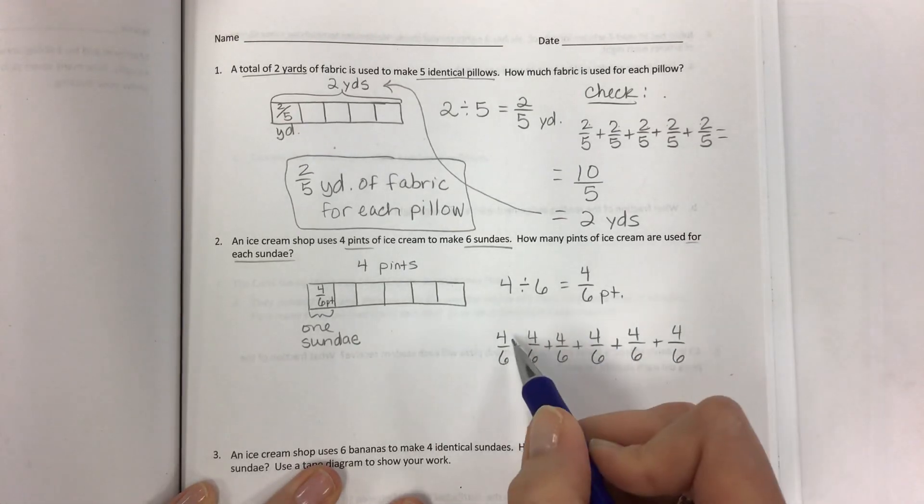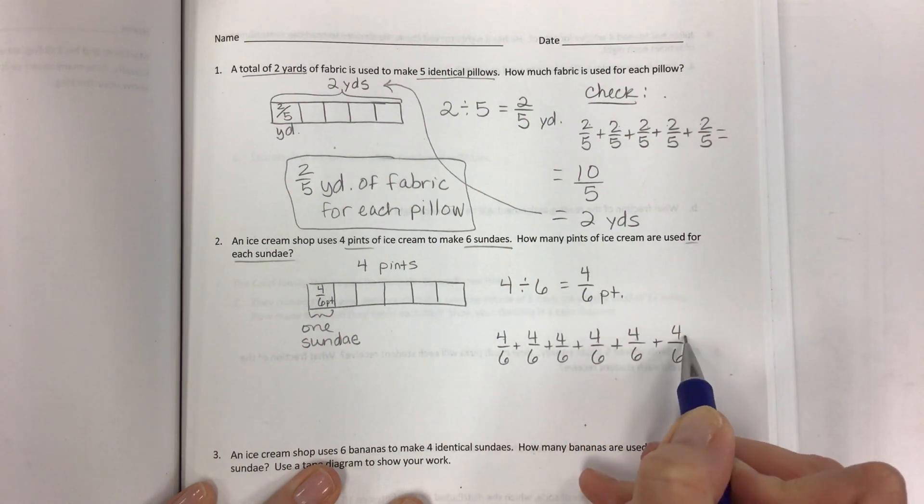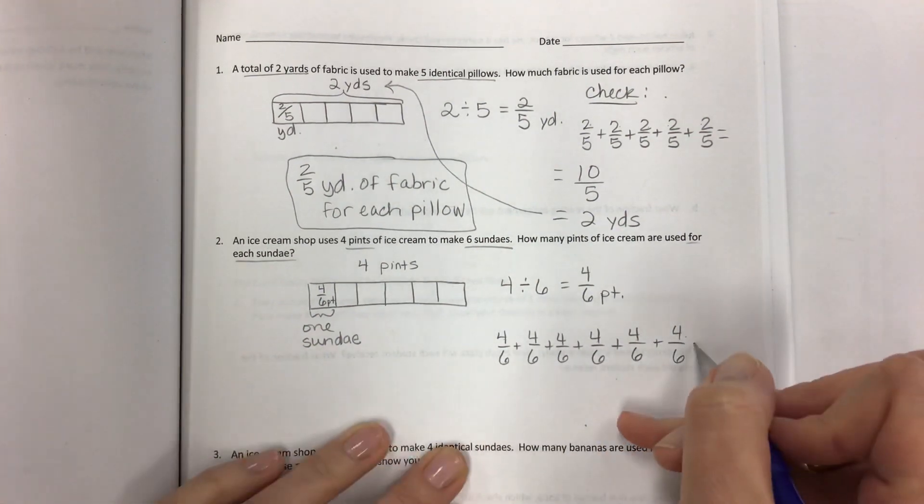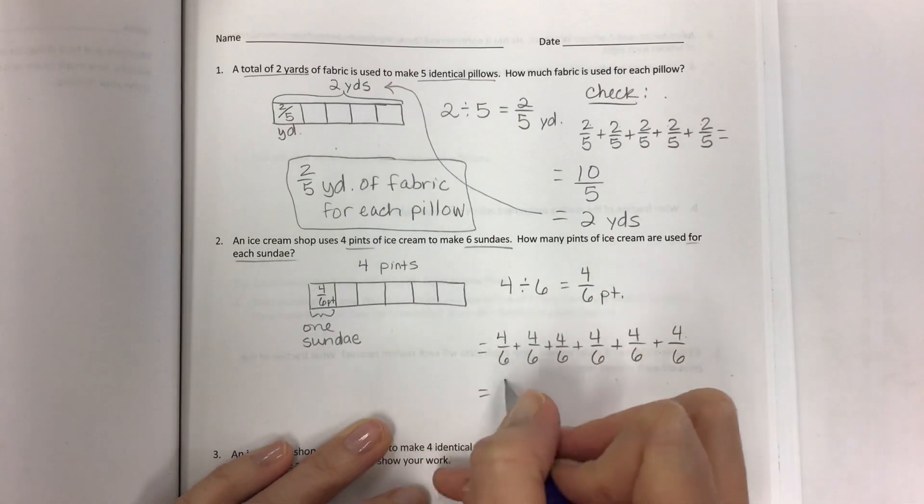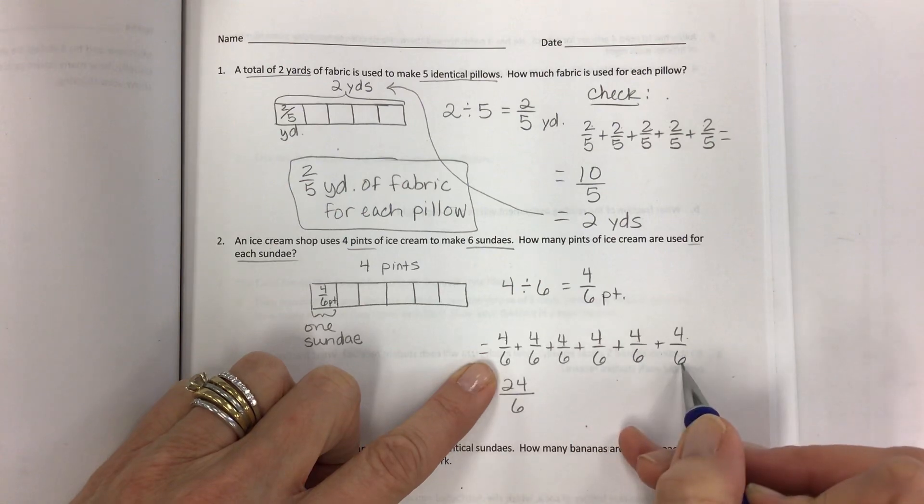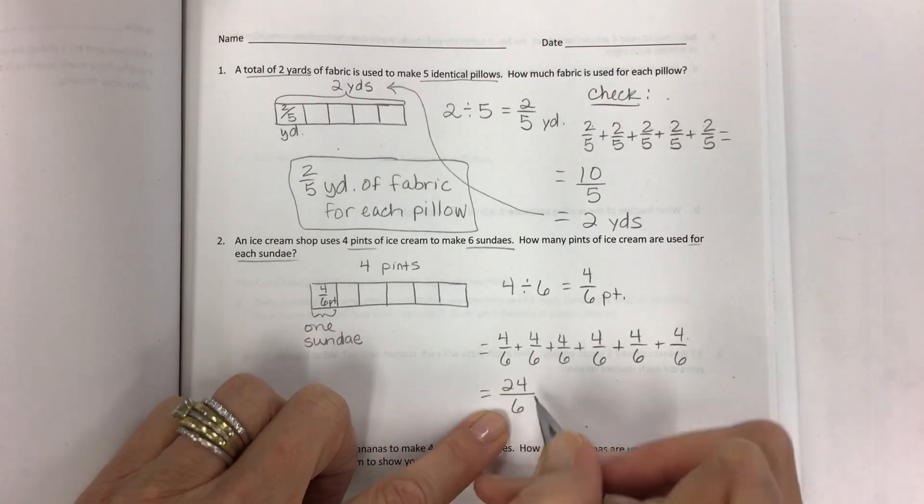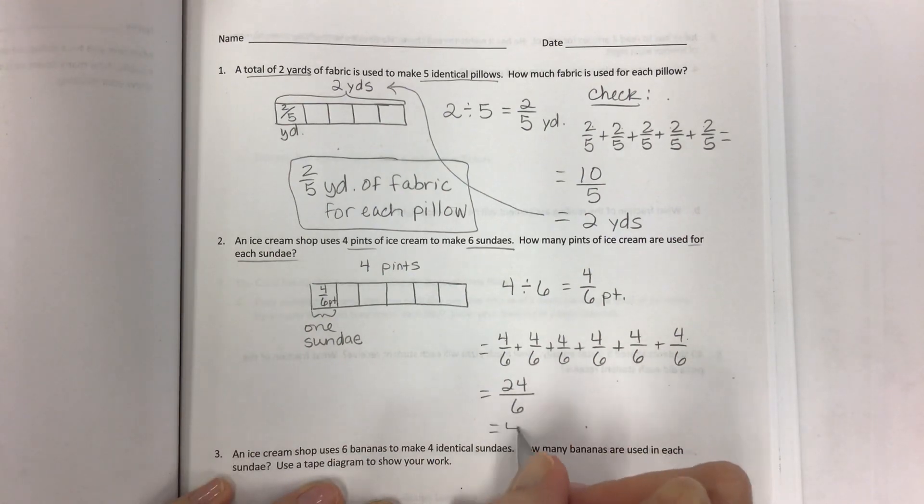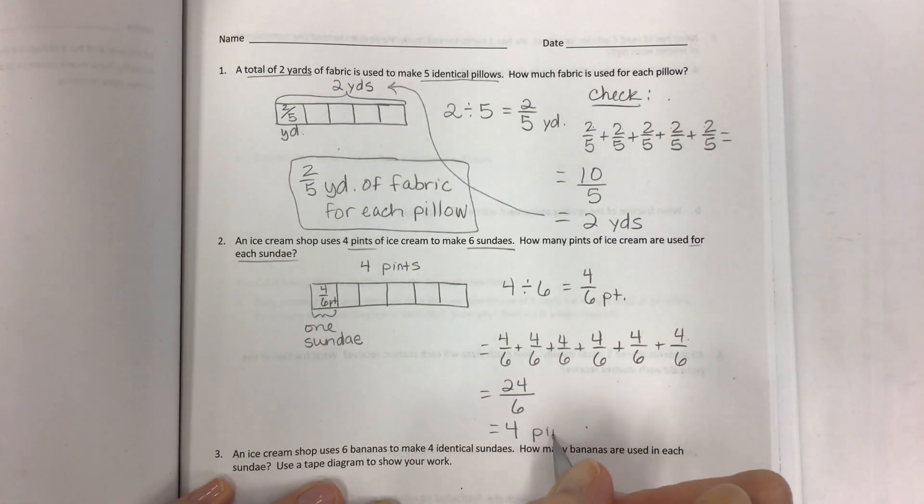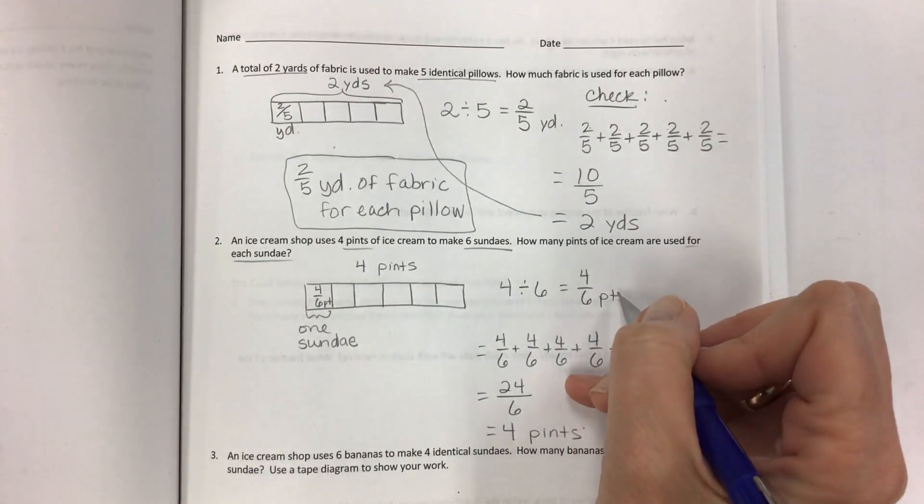It's four times six or you can skip count 4, 8, 12, 16, 20, 24. Or just do 4 times 6 is 24. Either way, you get 24 over 6. Because when you add, you're not adding the bottom. This is how many pieces there are. So this is our fractional unit. 24 divided by 6 makes 4. And that's where you get your four pints. So I just proved that my answer is correct.